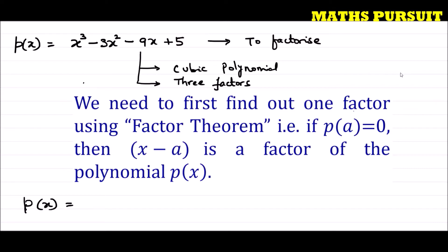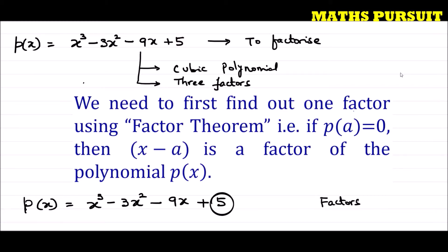The given polynomial is p(x) equals x to the power 3 minus 3x to the power 2 minus 9x plus 5. Now let us factorize the constant term. Actually, I made a small mistake — this is not plus 5, this is minus 5. So let us find out the factors of minus 5.